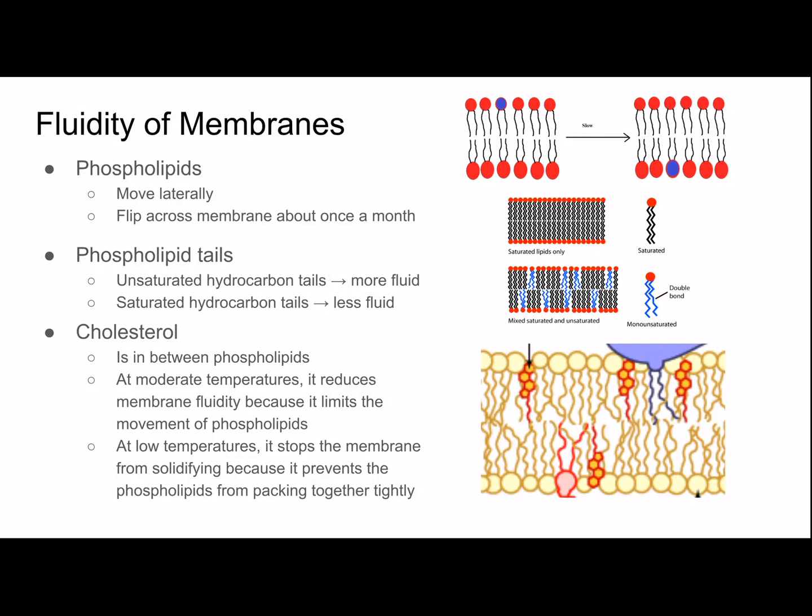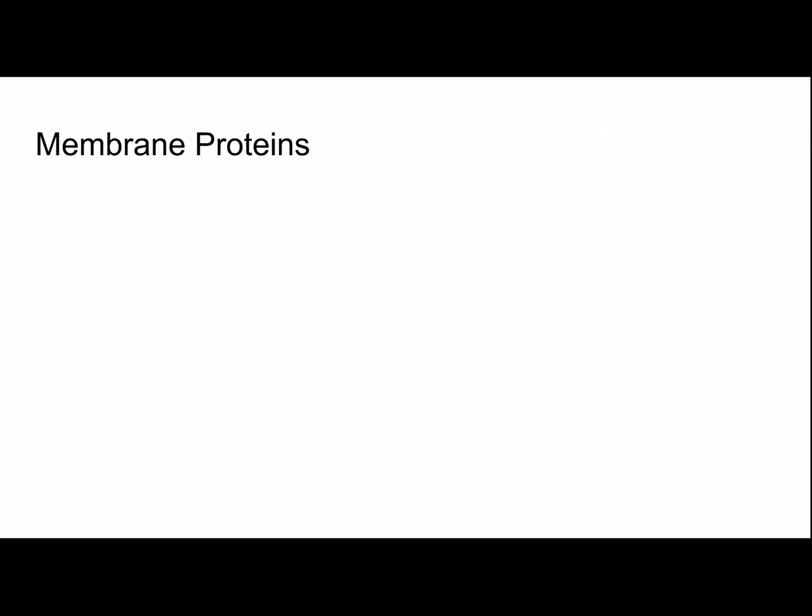The four-ringed orange molecules in the picture are cholesterol, and they're between phospholipids. Now we're going to get into the mosaic aspect and see how many different components make up the plasma membrane. First, we're going to talk about membrane proteins.